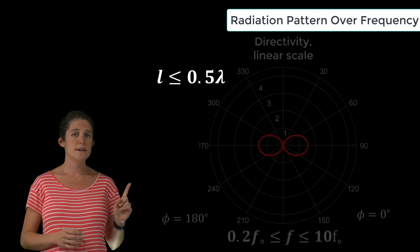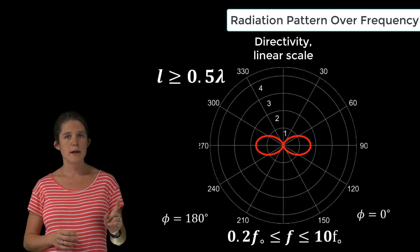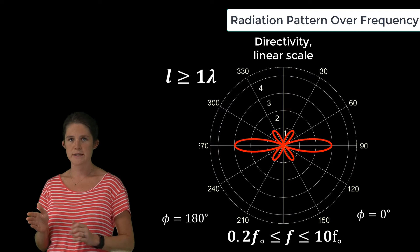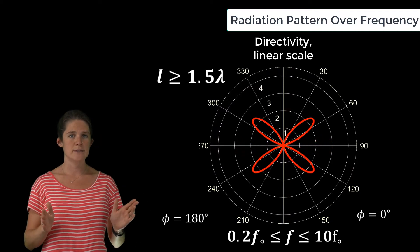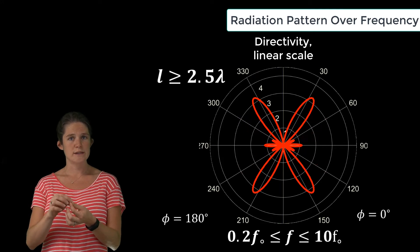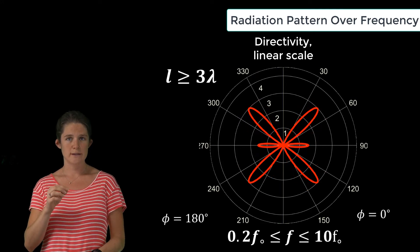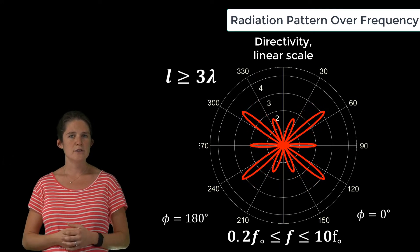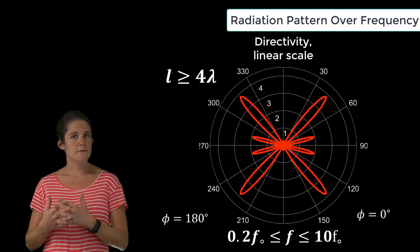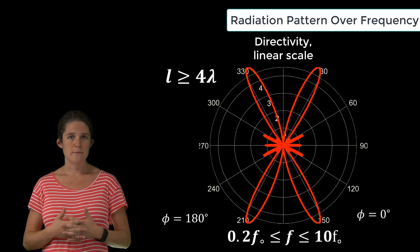Here's the directivity of the dipole antenna plotted as the frequency increases from one-fifth of the design frequency up to ten times the design frequency, as the length of the antenna goes from one-tenth to five wavelengths.